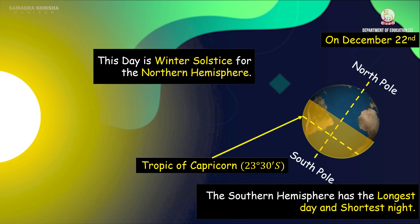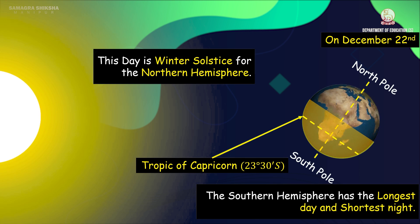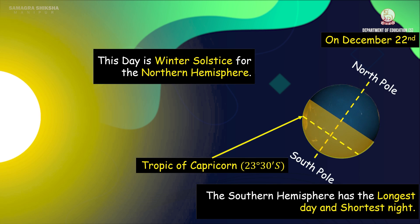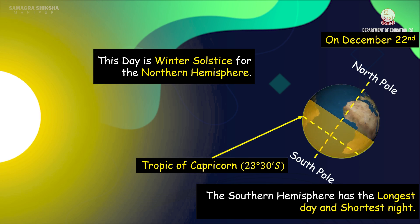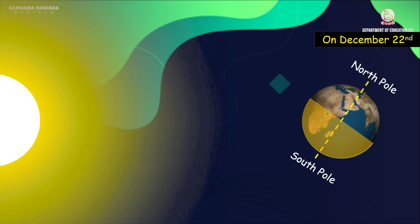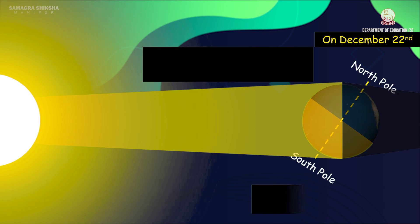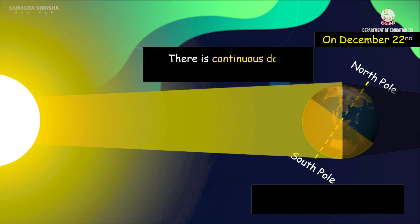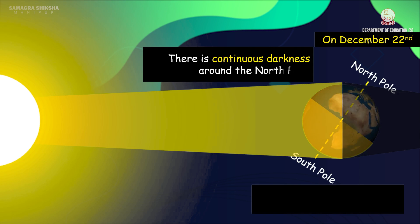Because on this day the northern hemisphere has the longest night and the shortest day. There is continuous darkness around the north pole.